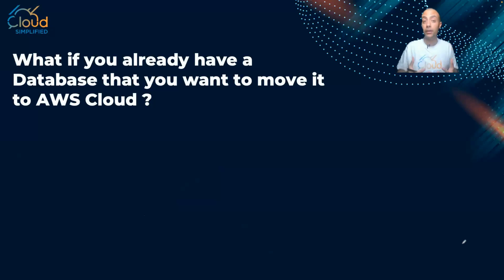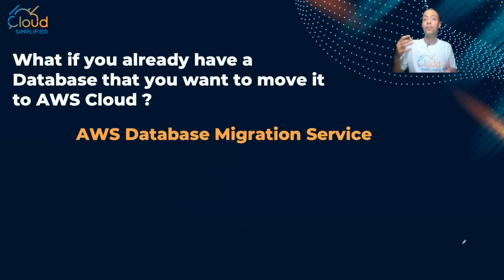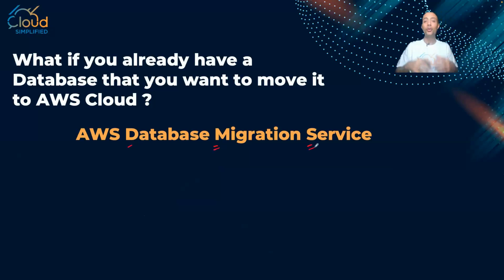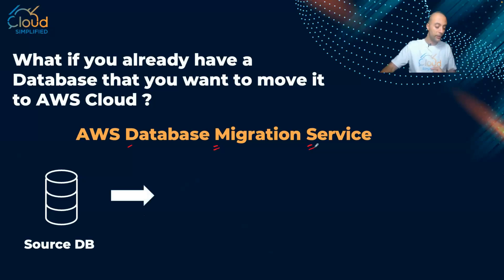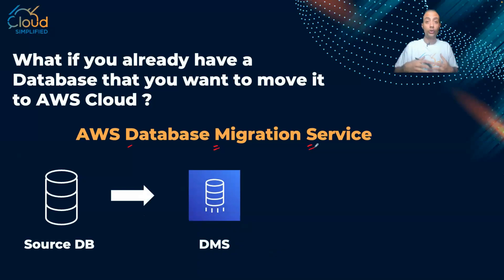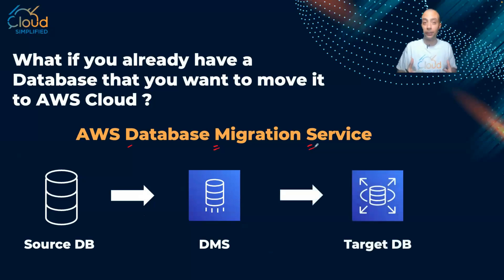Here comes this service from AWS called DMS, or Database Migration Service. DMS is a very interesting service. If you already have a source database — whether on-premise or even on another cloud service provider — and you want to migrate it into the AWS cloud, you simply connect it to DMS, and DMS will take that database and migrate it into a target database on AWS.